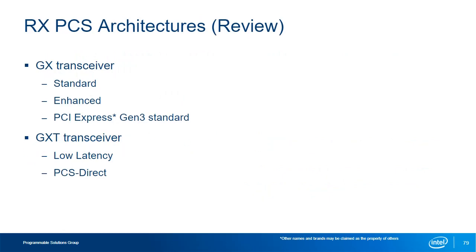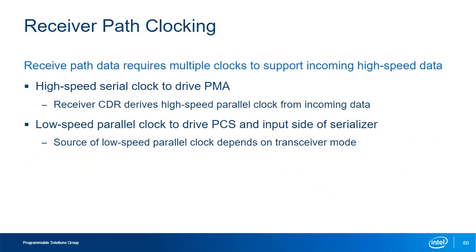Like the transmitter, receiver operation requires two clocks: a high-speed serial clock for the PMA and a lower-speed parallel clock for the deserializer and the PCS. The high-speed serial clock is derived directly from the incoming data by the CDR unit — this is why encoding or scrambling is used in most protocols, to guarantee enough transitions for the CDR to lock and recover the clock. The lower-speed parallel clock can come from a few sources depending on the transceiver configuration: in some cases derived directly from the high-speed serial clock by the CDR unit, and in other cases — like when the transceiver is in full-duplex mode — the low-speed clock comes from the paired transmitter path.